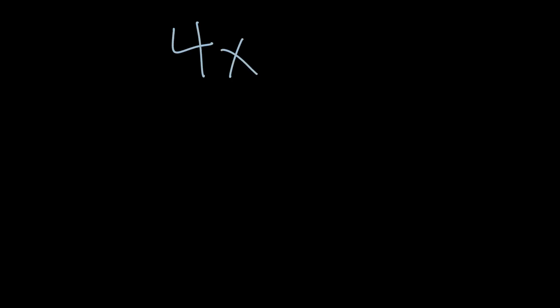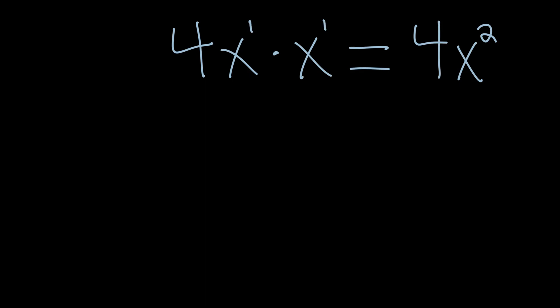Now we're ready to multiply monomials that have variables. Let's look at 4x times x. The 4 has no other number to multiply by, so I just keep the 4. Then x times x — remember, if there's no visible exponent it's x to the first power. So x to the 1st times x to the 1st: add the exponents, 1 plus 1 equals 2, giving us x squared. The answer is 4x squared.